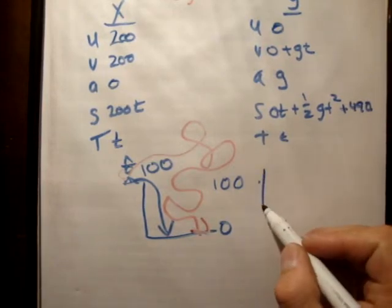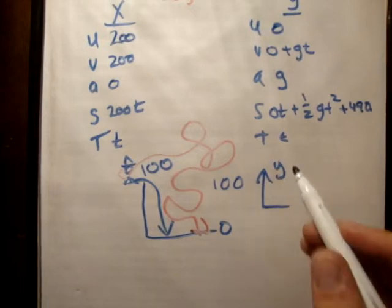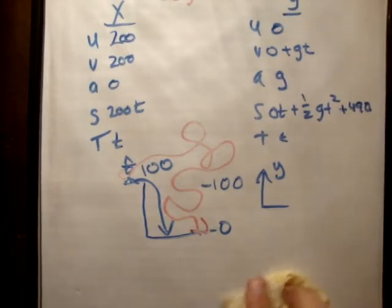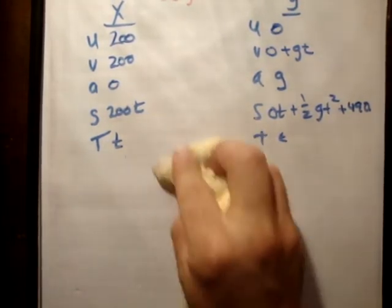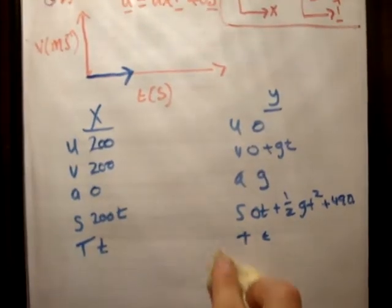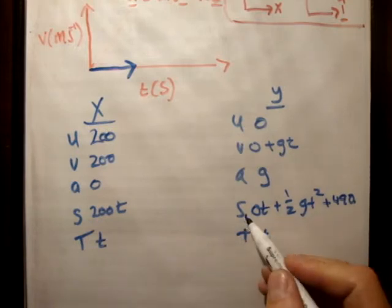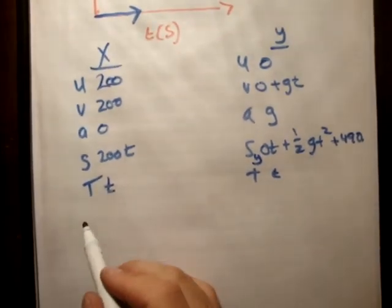And also, because we define positive Y upwards, that means it would actually be negative 100 meters. That would be the displacement. So in this case, our displacement is going to be negative 490. But either way, we want the S sub Y to be equal to 0. So let's just do that.